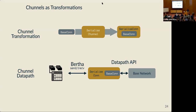Channels work by taking in connections as input and returning new connections with some added features as their output — they're basically connection transformers. In this example, we start with a base connection. If we apply the serialization channel implementation to it, it returns a new connection: a serializing connection that encapsulates the inner connection. When the application sends messages, the serialized connection serializes messages from application objects to bytes and passes those bytes into the base connection, which uses the Linux kernel networking stack to carry out communication. The reverse happens on the receive path.